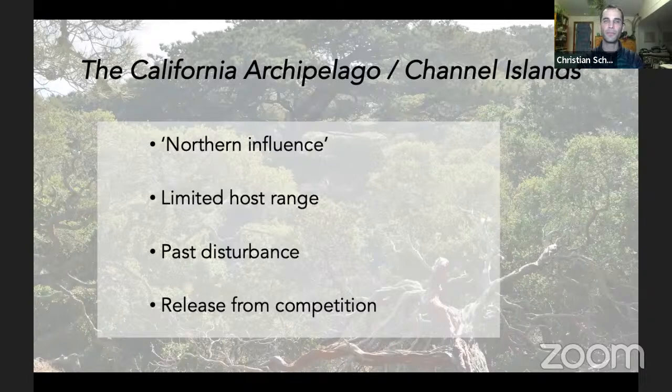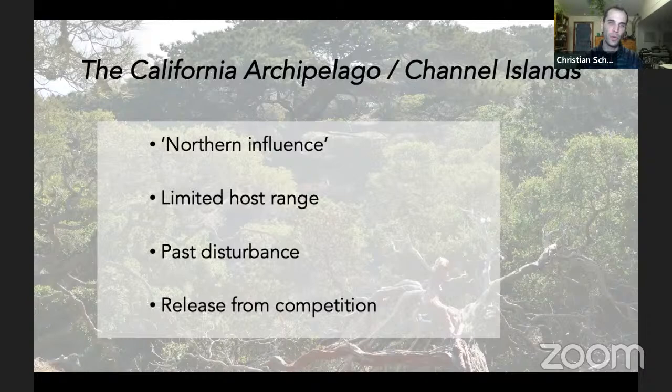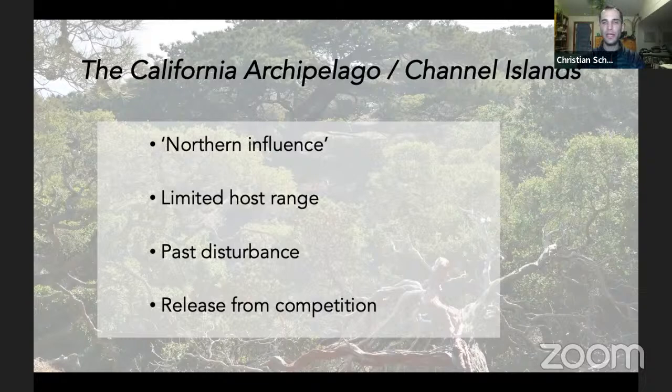They're also somewhat sheltered by Point Conception, so storms moving north to south tend to hit Point Conception first — the islands are in a bit of a rain shadow. It's a balancing act: the further west you are like San Miguel Island, the more likely you are to get precipitation; the further south and in the shadow of Point Conception, the less rain you'd otherwise receive. There's also a limited number of plant hosts on the island — not every mainland plant has successfully dispersed there.